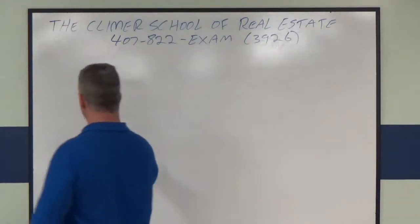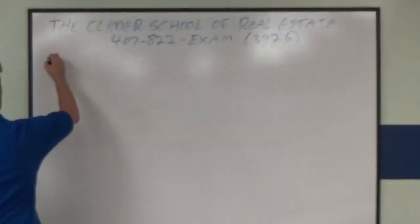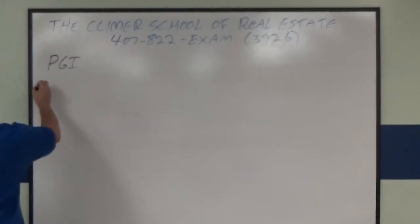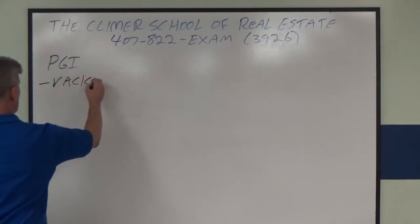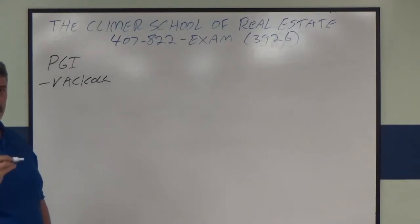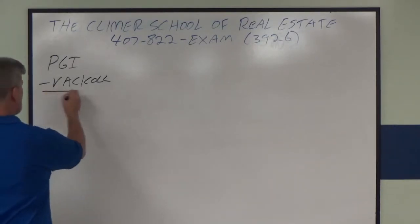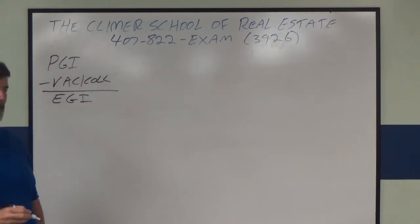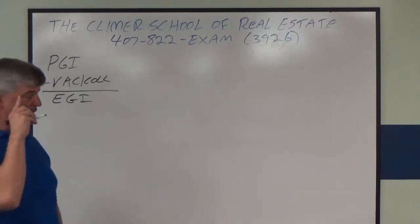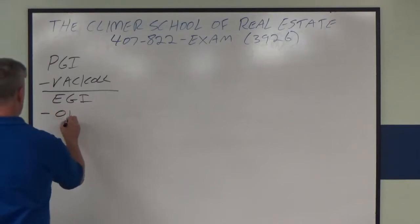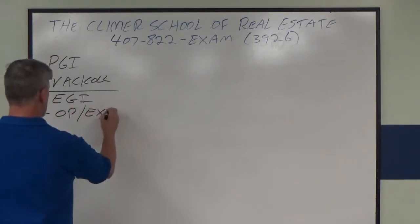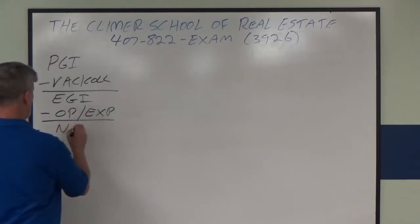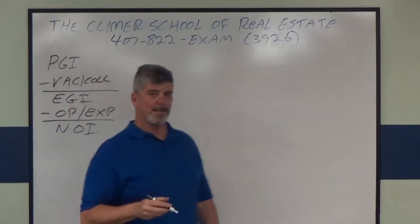So it goes like this: potential gross income minus vacancy and collection losses gives you effective gross income. Effective gross income minus operating expenses gives you NOI — net operating income. That's very important. That's the basic flow.